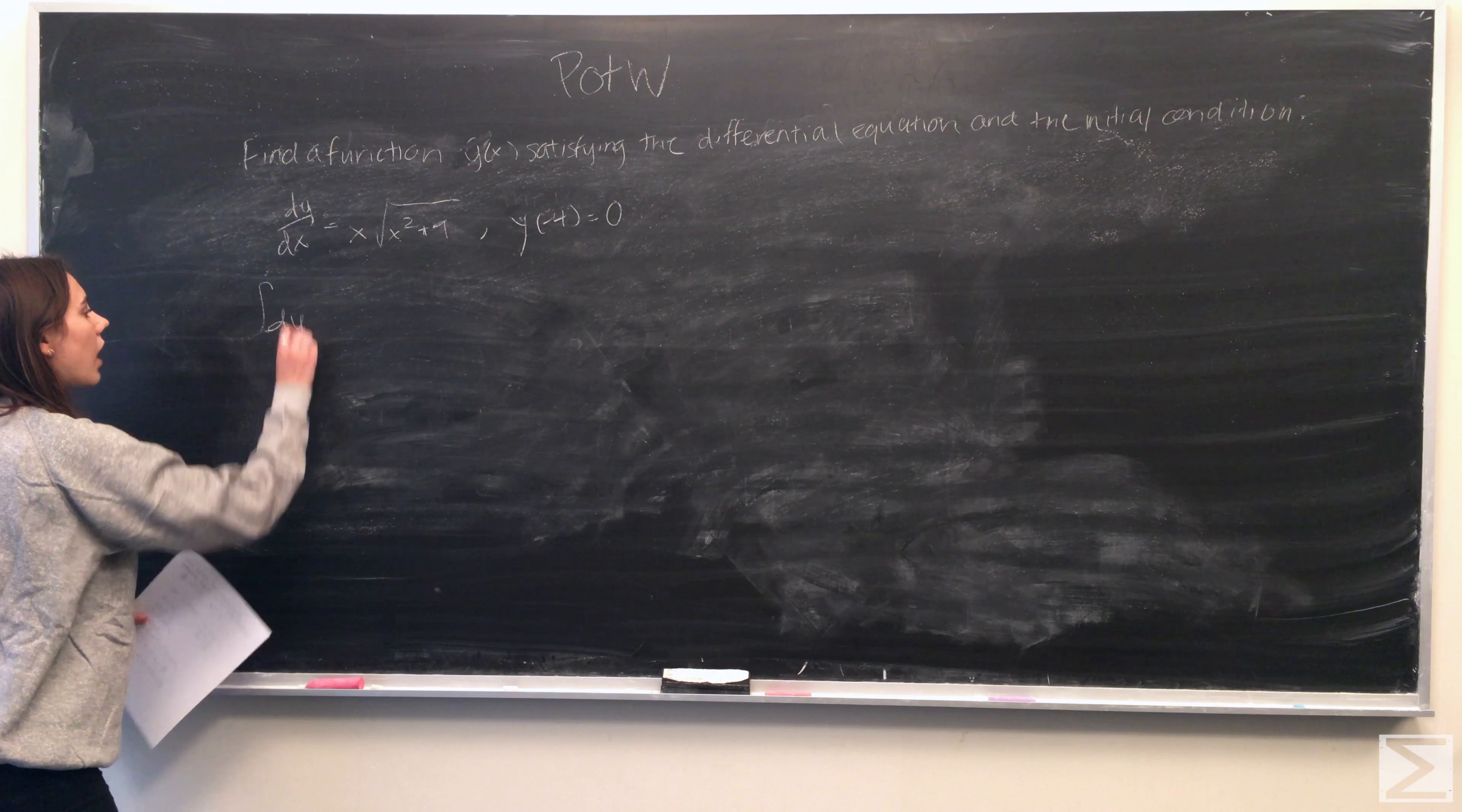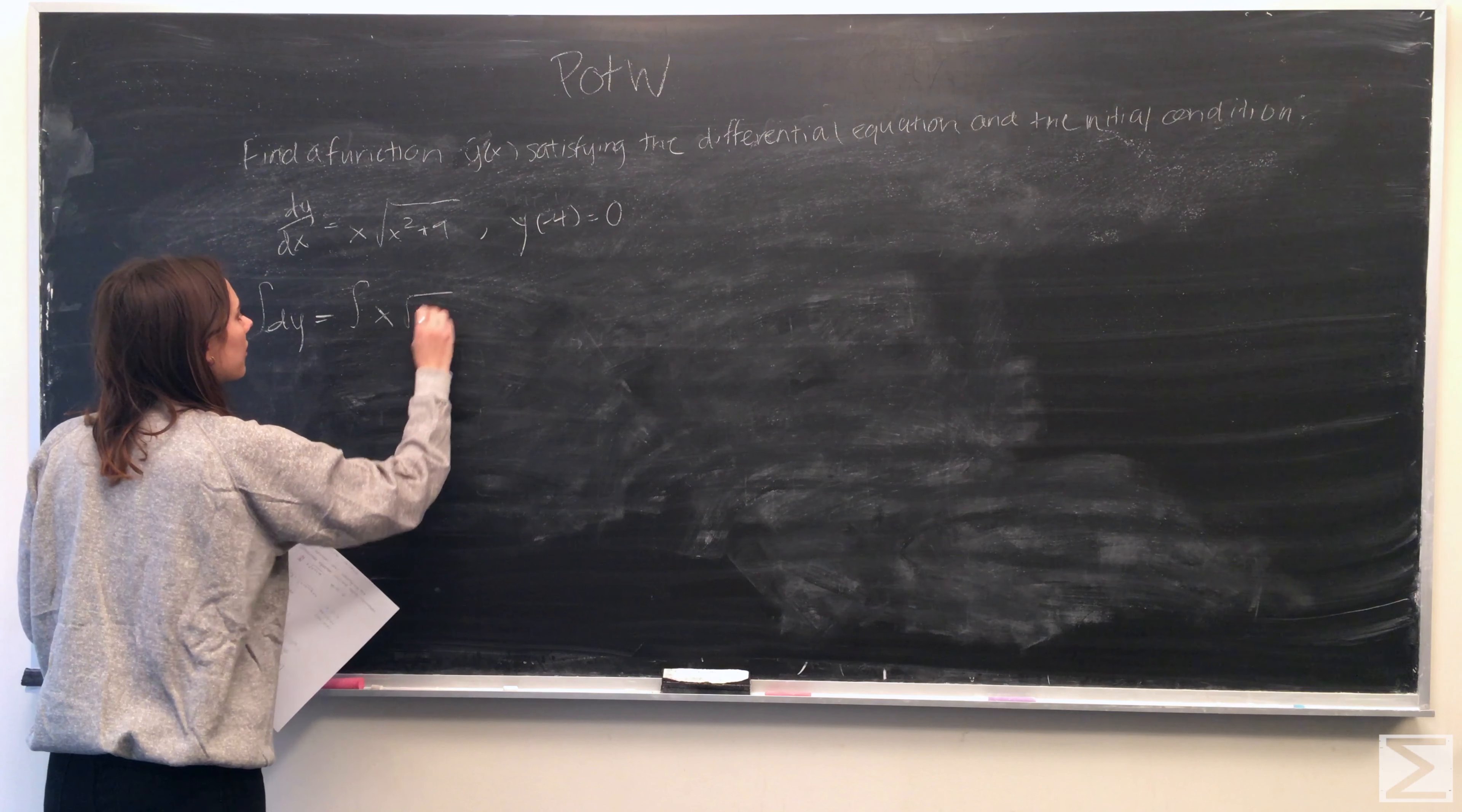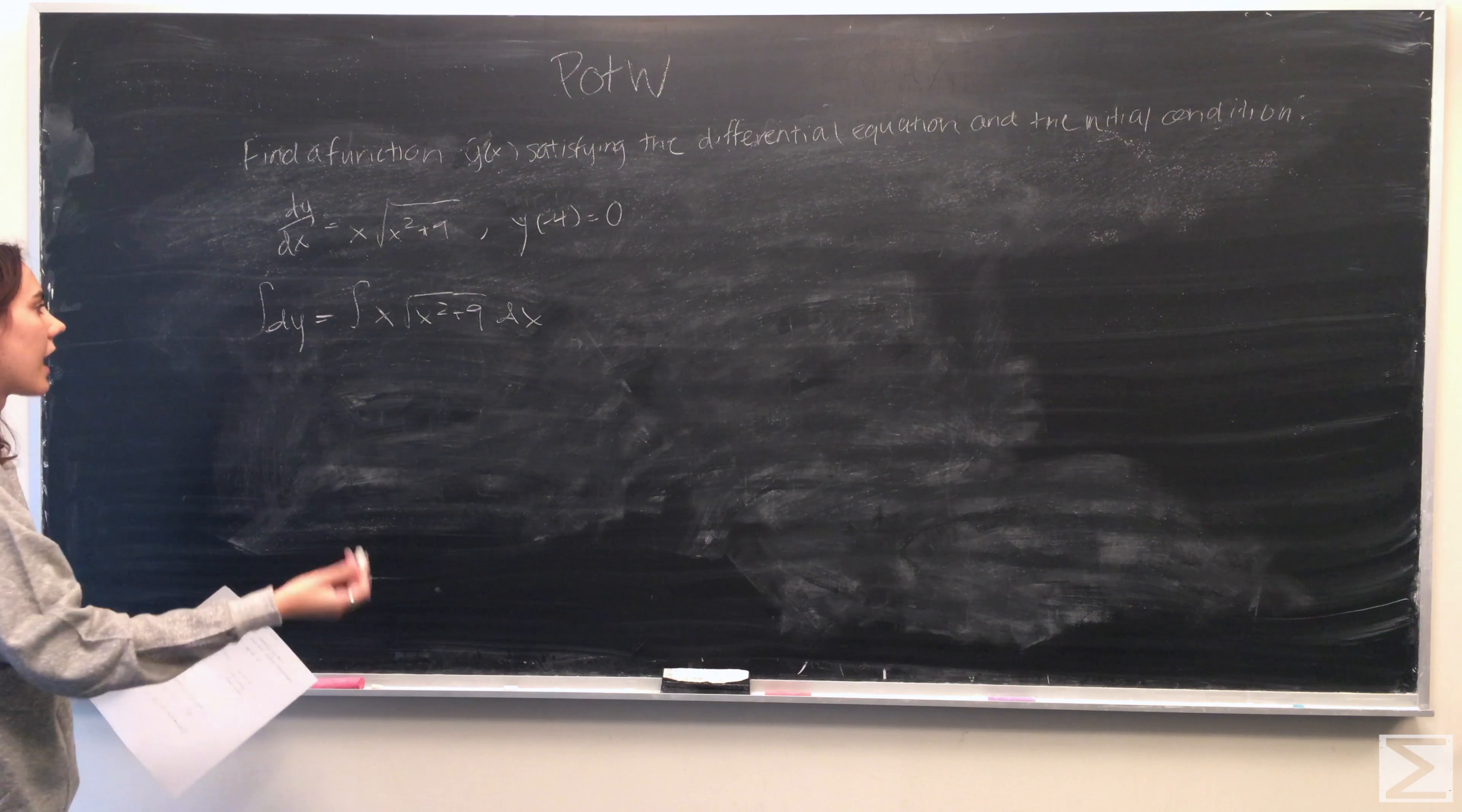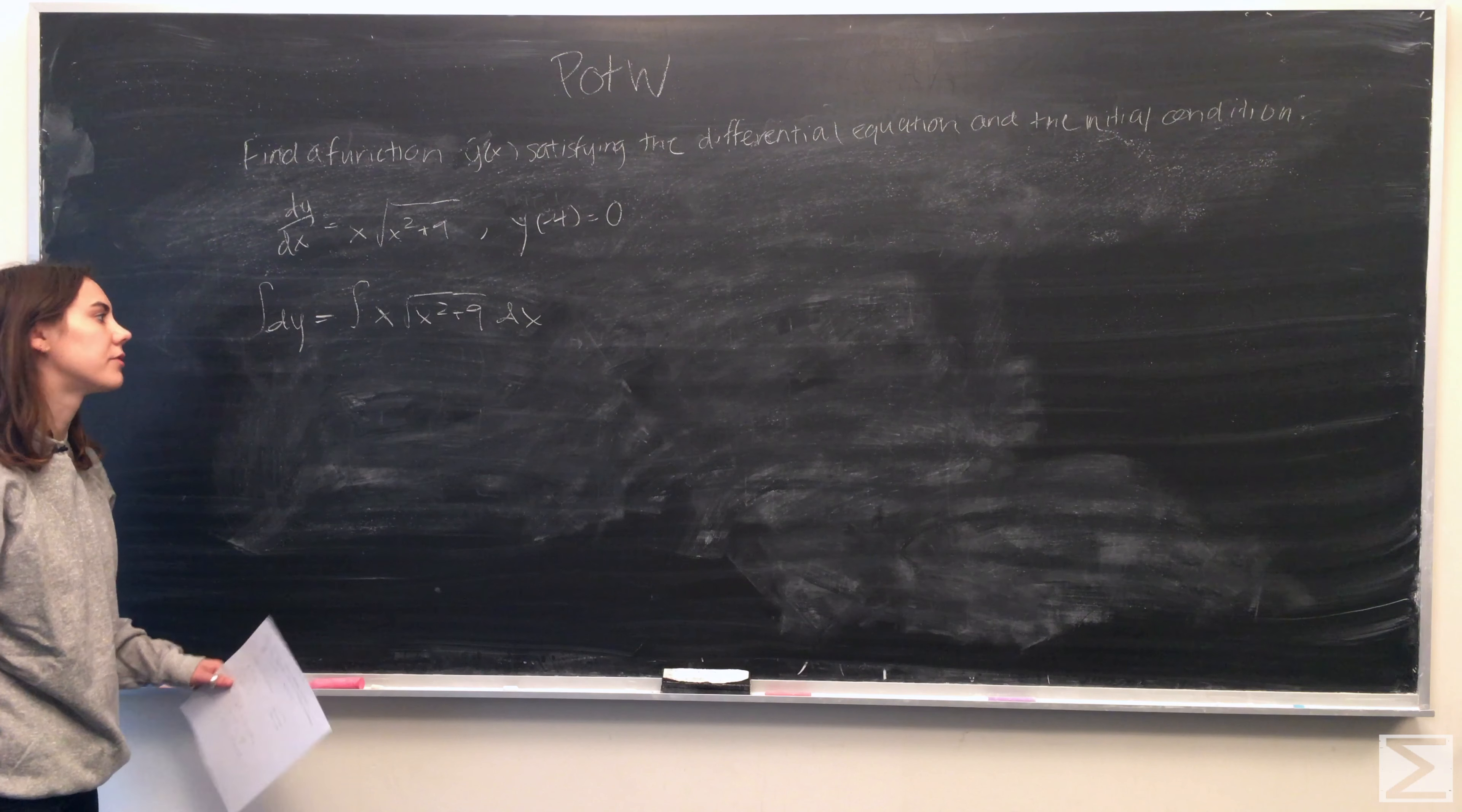So what we can immediately see is that the integral of dy is equal to the integral of x times the square root of x squared plus 9 dx. So just looking at this integral, what we can then do is use u substitution to simplify it and then solve.